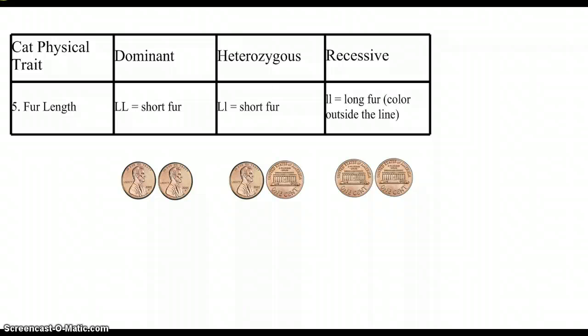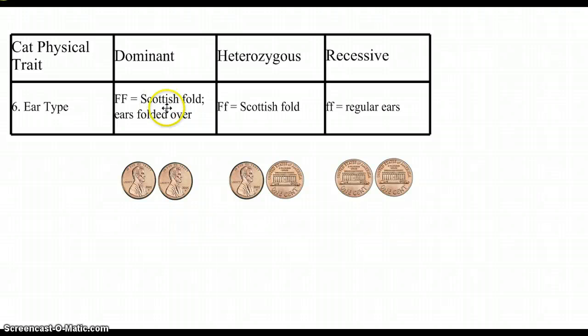The type of ears. Scottish fold, they're kind of just like flapped over. You see this more commonly in dogs than you do cats. Two heads would be folded over, the same thing for a head-tail combination, and then regular ears just standing up would be two tails.